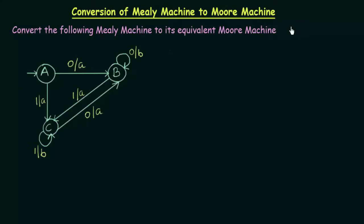Till now we have studied about the conversion of Moore Machine to Mealy Machines, and in this lecture we will be studying about the conversion of Mealy Machine to Moore Machine. Here we have a Mealy Machine given and our task is to convert it to its equivalent Moore Machine.